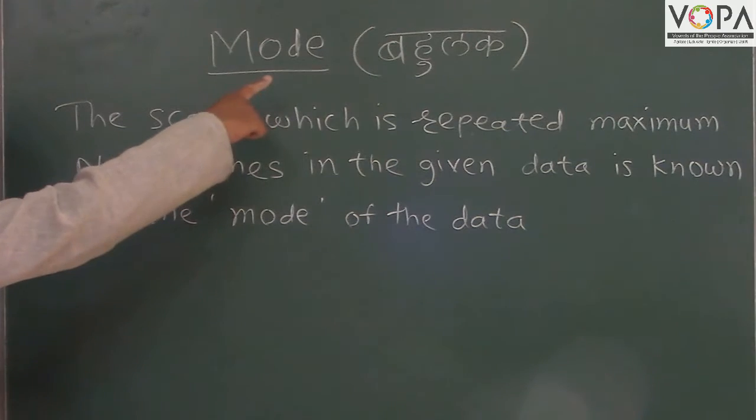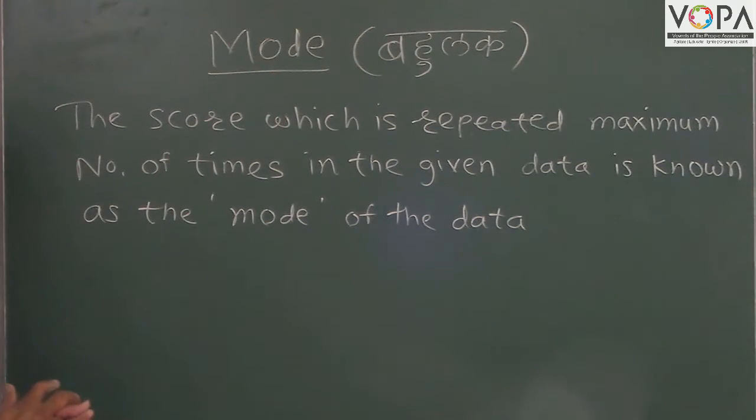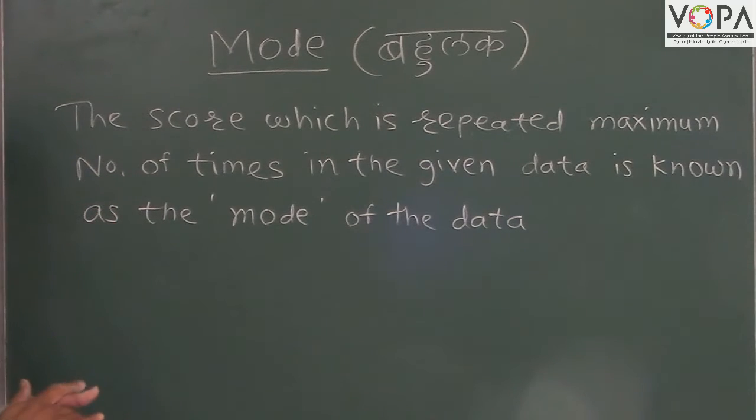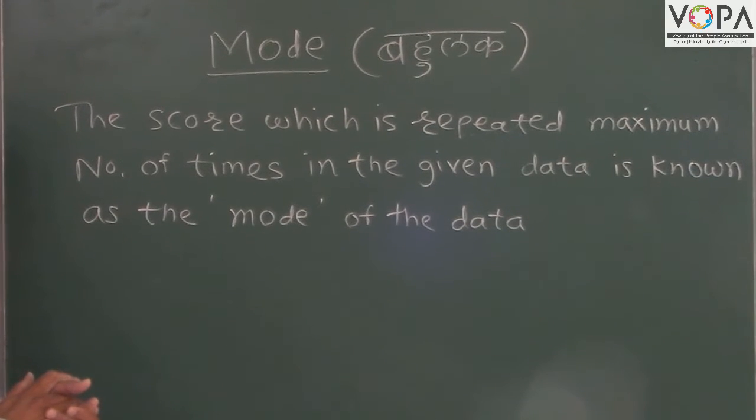Now we take mode. In Marathi it is called as Bahulak. The score which is repeated maximum number of times in the given data is called as the mode of the data.